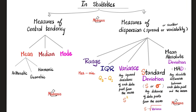To learn about the mean, the median, the mode, the range, the interquartile range, the variance, and the standard deviation, please refer to the previous videos in this statistics playlist. The standard deviation is the square root of the variance, which means the variance is the square of the standard deviation.